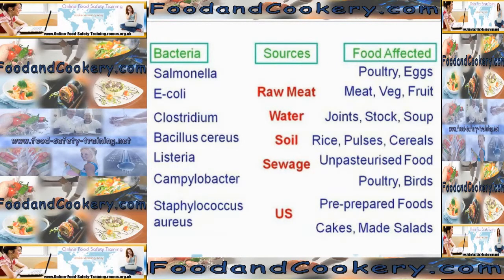Bacteria such as Salmonella, E. coli, Clostridium, Bacillus cereus, Listeria and Campylobacter are found in raw meat, water, soil and sewage. Staphylococcus aureus, however, is found in us — we are the natural reservoir for Staphylococcus aureus.